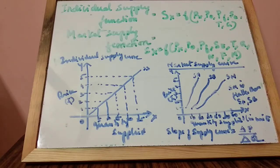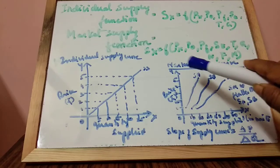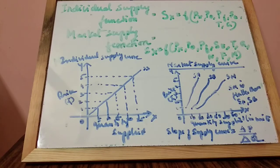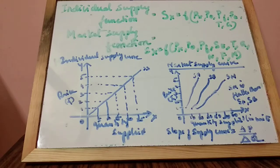Now, we will see the individual supply curve and market supply curve. A supply schedule is a tabular statement showing various quantities of a commodity being supplied at various levels of price during a given period of time. There will be a schedule showing individual supply with price and quantity supplied.